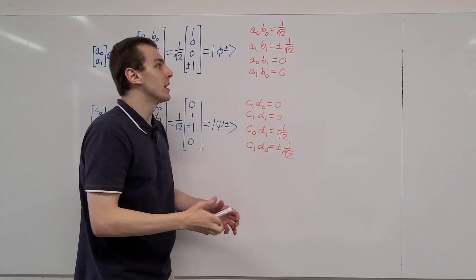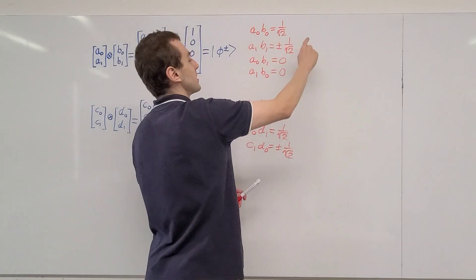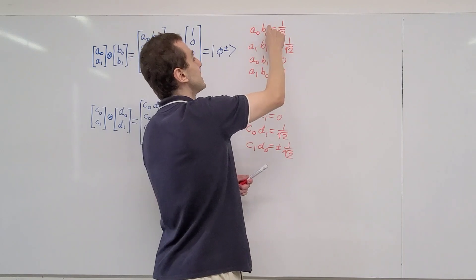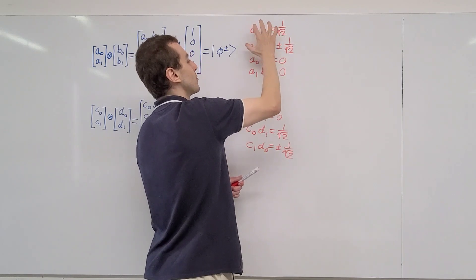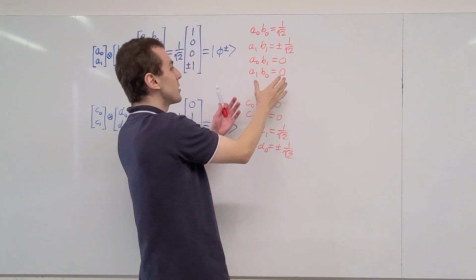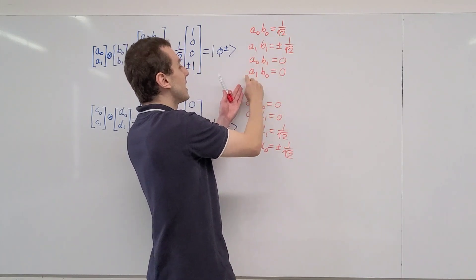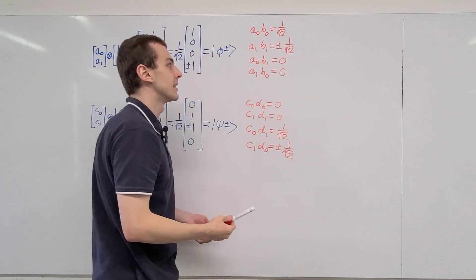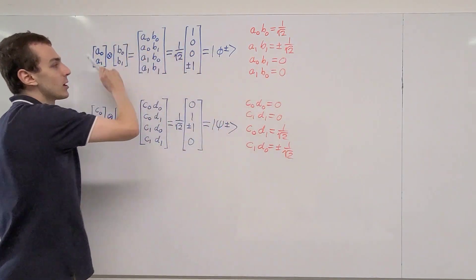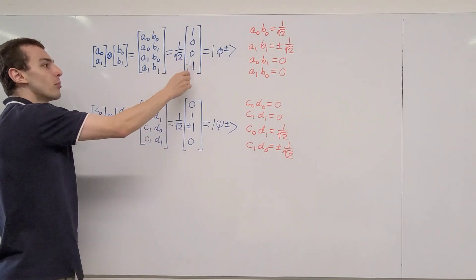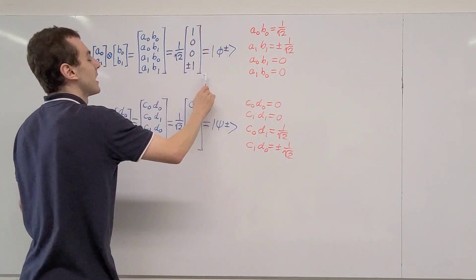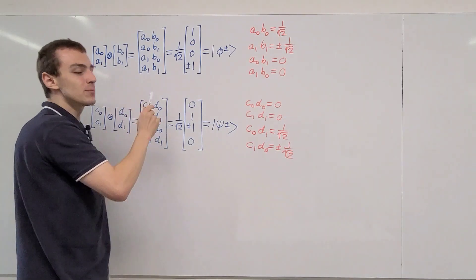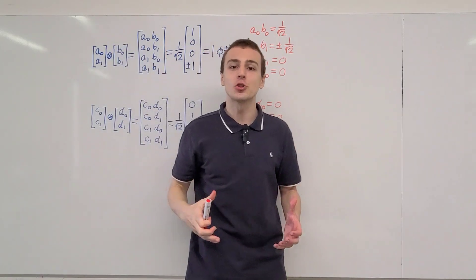That is a direct contradiction. The first equations tell us that a0, b0, a1, and b1 all have to be non-zero, but the second equations force at least one of them to be zero. Both statements cannot be true simultaneously — we have a contradiction. Therefore, this decomposition is not valid: it is not possible to express the Φ± Bell states as a tensor product of a single-qubit state with another single-qubit state. This property is known as entanglement.